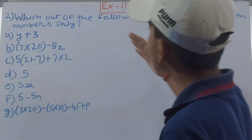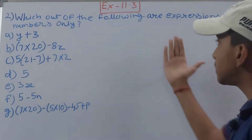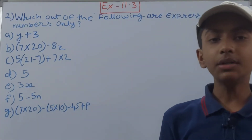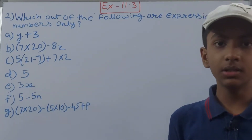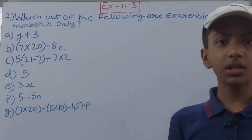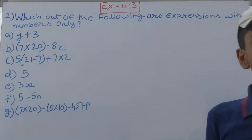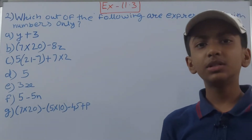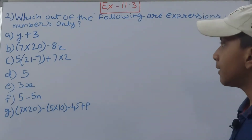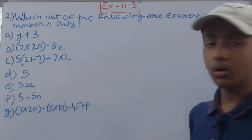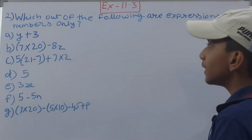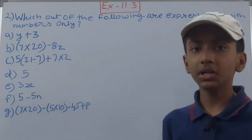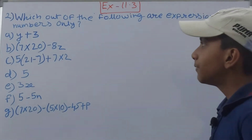The question is: which out of the following are expressions with numbers only? Now, in some expressions you must have seen there are variables. Variables are alphabets which do not have a fixed value — they are called variables. So it can be a, b, c, d, x, y, z — any alphabet. We have to identify those expressions which only have numbers in them and no variable.